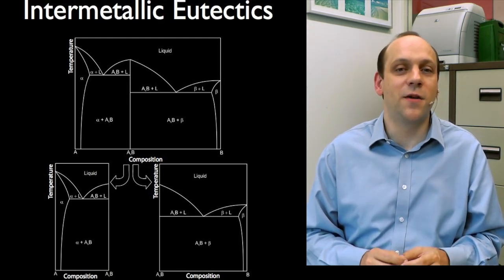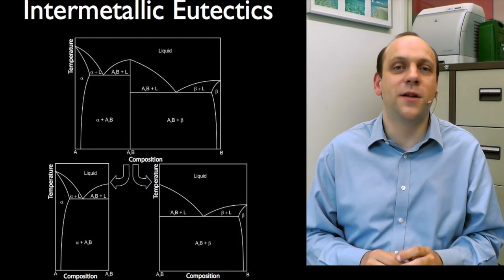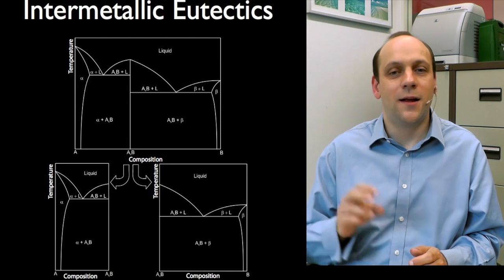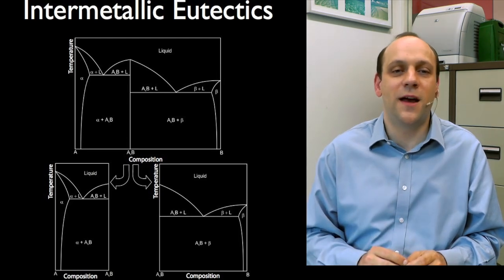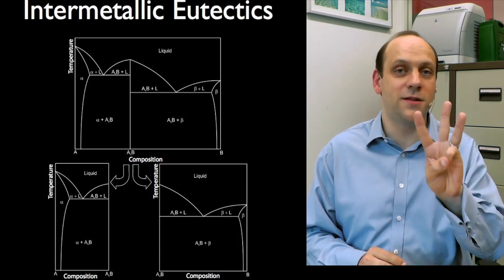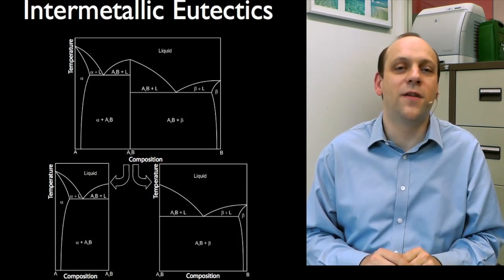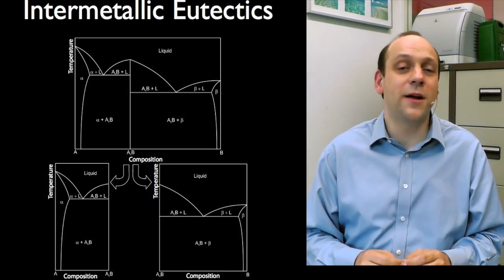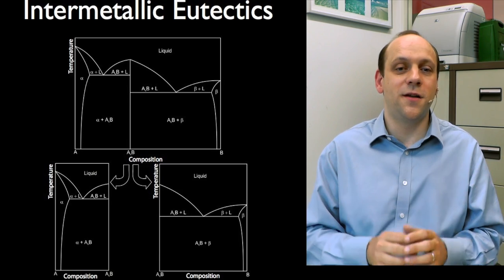And so in this phase diagram, we've got a liquid phase with complete solubility, an alpha phase with some solubility for B, a beta phase with some solubility for A, and an A_X B intermetallic in between. So we've got three solid phases and one liquid phase. Now you might think, okay, that's now getting kind of hard to read, but actually it just splits into two diagrams.